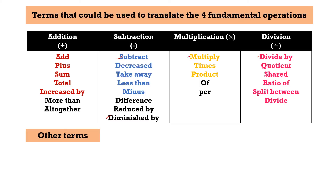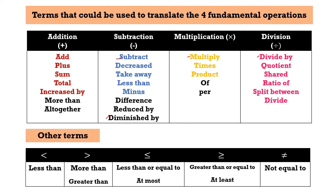Here are some other terms and symbols that we use in our discussion. This is the symbol for less than, the symbol for greater than, the symbol for less than or equal to (or "at most"), the symbol for greater than or equal to (or "at least"), and the symbol for not equal to.